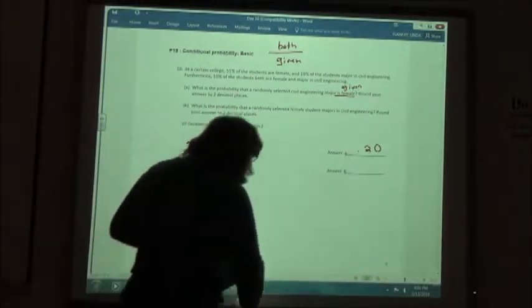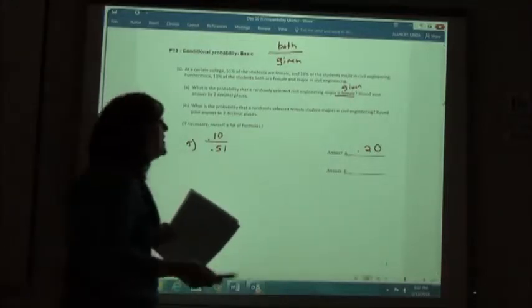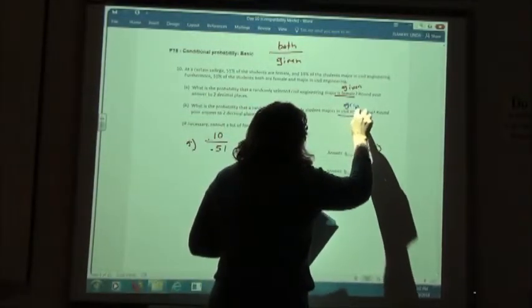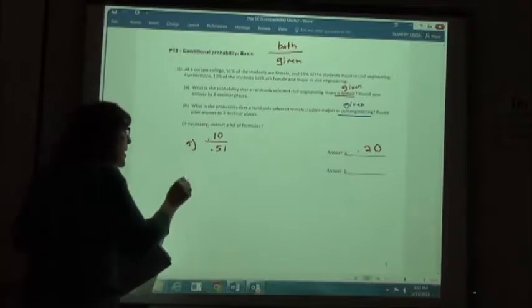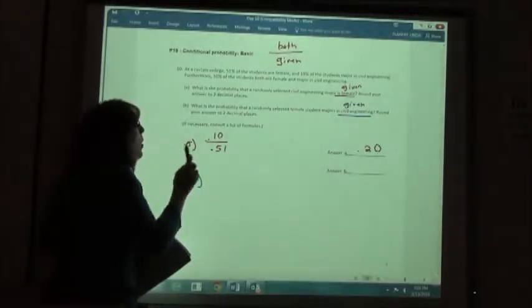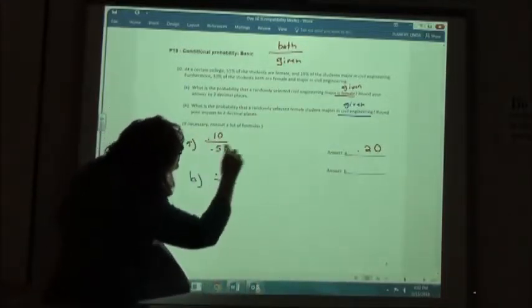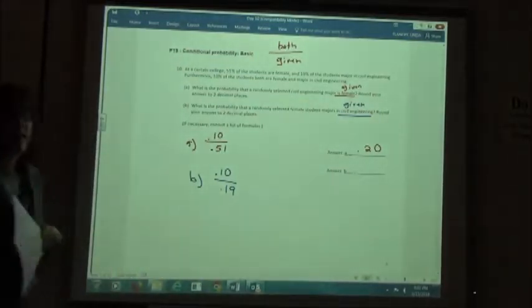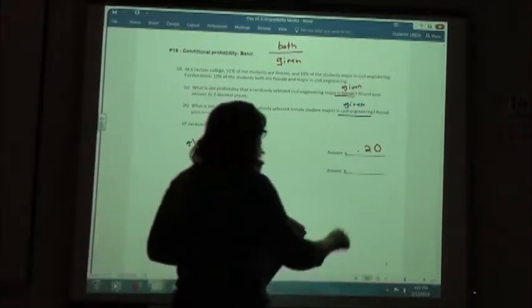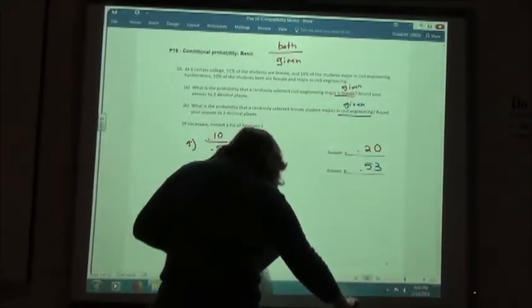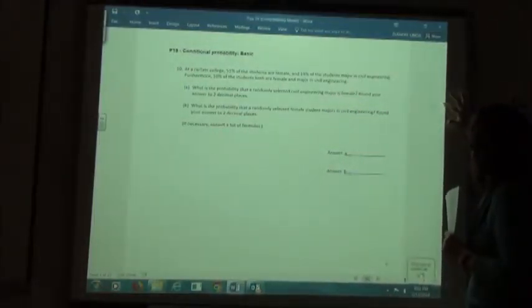The second part of this: what is the probability that a randomly selected female student majors in civil engineering? Again, this is the given part of it. We know they major in civil engineering, we want to find which ones are female. So again, the top number is the both - the both is 10%. The bottom number is the civil engineering, which was 19%. So I'm going to take 0.10 divided by 0.19, which equals 0.53.